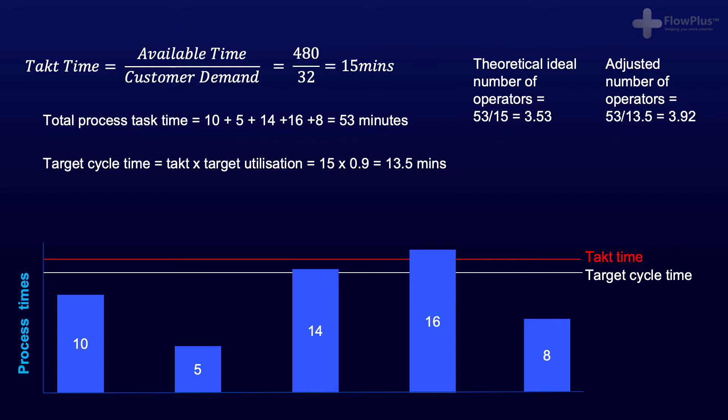In reality, we cannot have a fraction of an operator, so we need to round this number 3.92 up to its nearest integer, so we therefore need 4 operators to carry out the work.